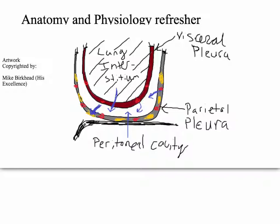You have blood supply in the visceral and parietal pleura, but you only have lymphatic drainage on the parietal side. That's important when you start talking about heart failure and why the lymphatic drainage isn't getting fluid out fast enough.